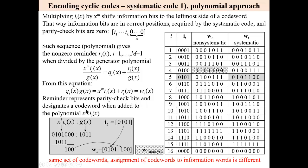The remainder designates a code word when added to the shifted polynomial. For example, dividing the polynomial — information part at the left and three zeros — by the generator polynomial, the remainder is 1,0,0. This remainder represents the parity check bits. Note that we have the same set of code words as for the non-systematic code; only the assignment of code words to information words is different. The code word corresponding to 0,1,0,1 in the systematic code corresponds to 0,1,0,0,0 in the non-systematic code.